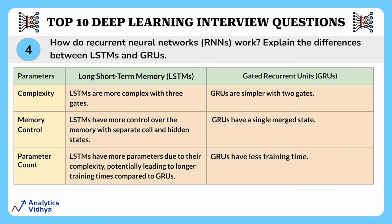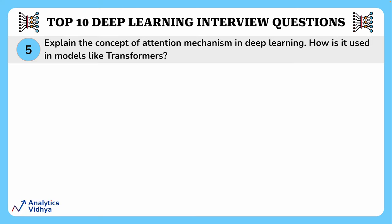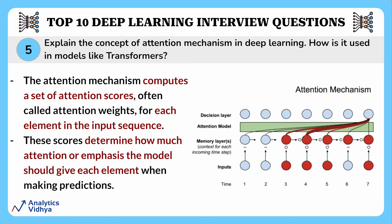Now let us look at the differences between LSTM and GRU — this table discusses the differences between them, so take a screenshot for your reference. This next question asks the concept of attention mechanism and how it is used in models like transformers. The attention mechanism computes a set of attention scores, often called attention weights, for each element in the input sequence.